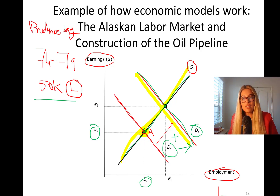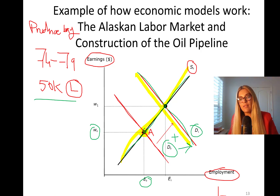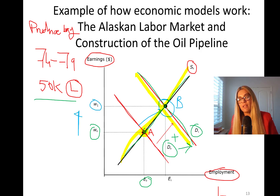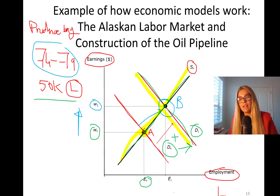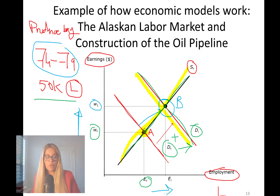We look at a new equilibrium. The D1 and S0 intersection moves equilibrium from point A to point B. What changes? The wage rate has gone up — you expect real wages to rise between 1974 and 1979. Employment — the number of people hired — goes up as well in that time period.